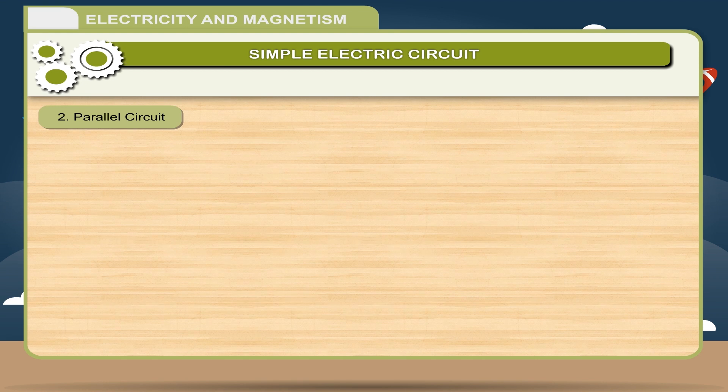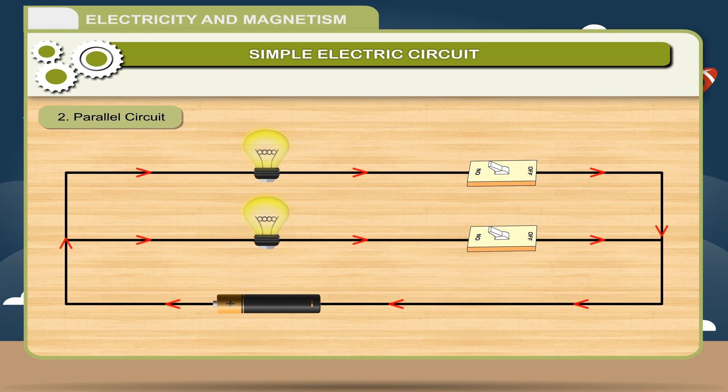2. Parallel circuit. If all the devices are connected individually to the source of current so that there is same potential difference across each device then the combination will be called parallel combination. In parallel combination components are independent to each other. Due to this reason the electrical connection in household circuits are done in parallel. If any appliance becomes faulty it will not affect the working of the appliances.